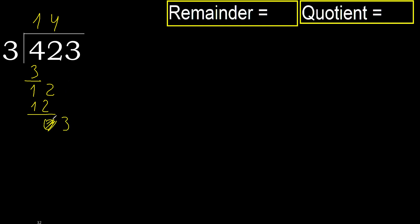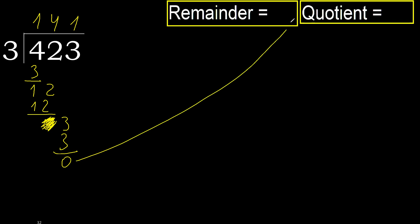Eliminate the 0. Bring down 3: 3 multiplied by 1 is 3, not greater, ok. Subtract. Next — no more numbers, therefore finish. So 423 divided by 3 is 141.